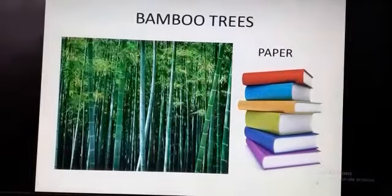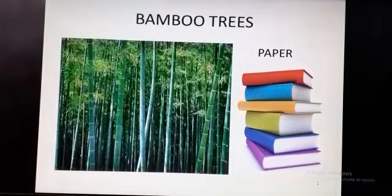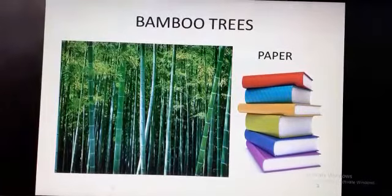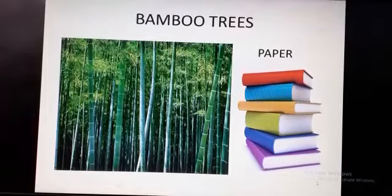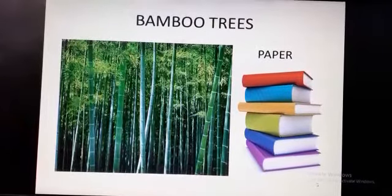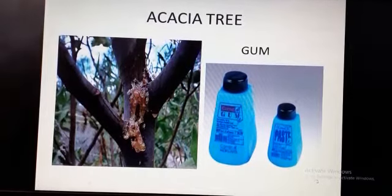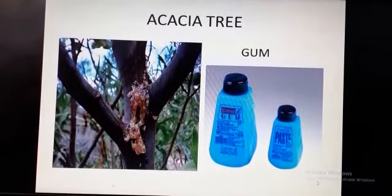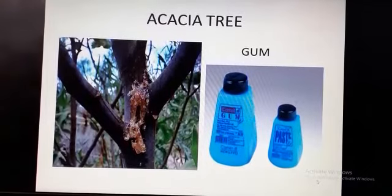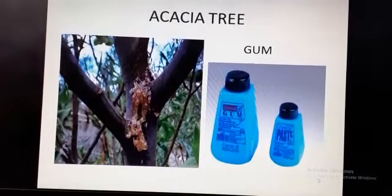The next category is bamboo trees. You can see the picture of bamboo trees — they are so tall. Bamboo trees are used to make paper, and paper is used to make your books and notebooks. Another one is the acacia tree, which means a gum tree. You can see some liquid on the tree — this is gum, and it is used to paste things and papers.